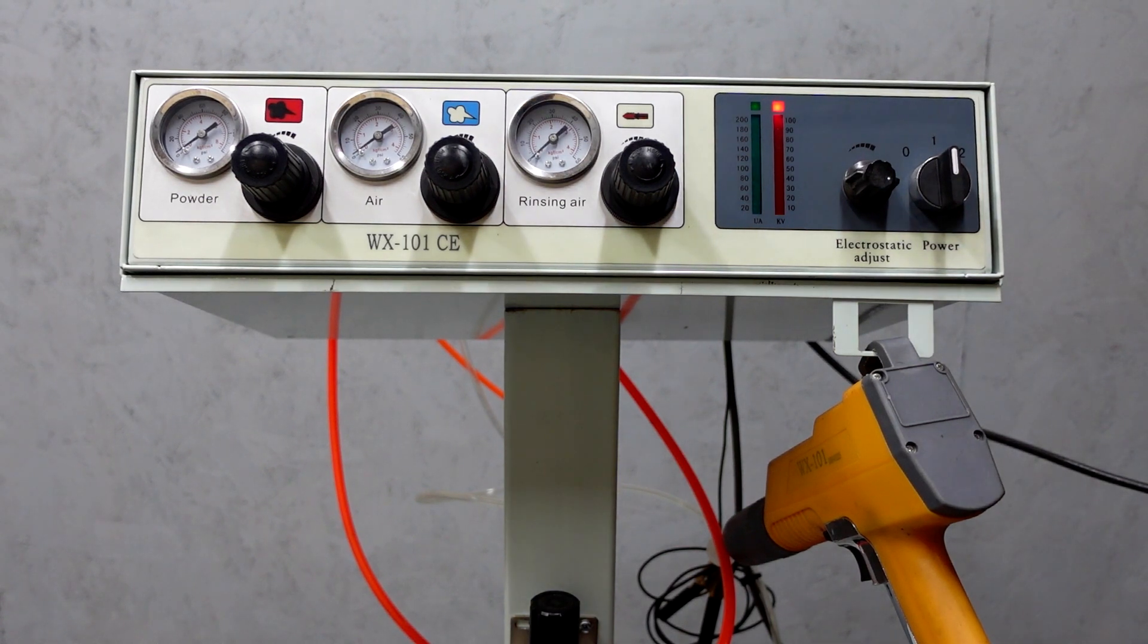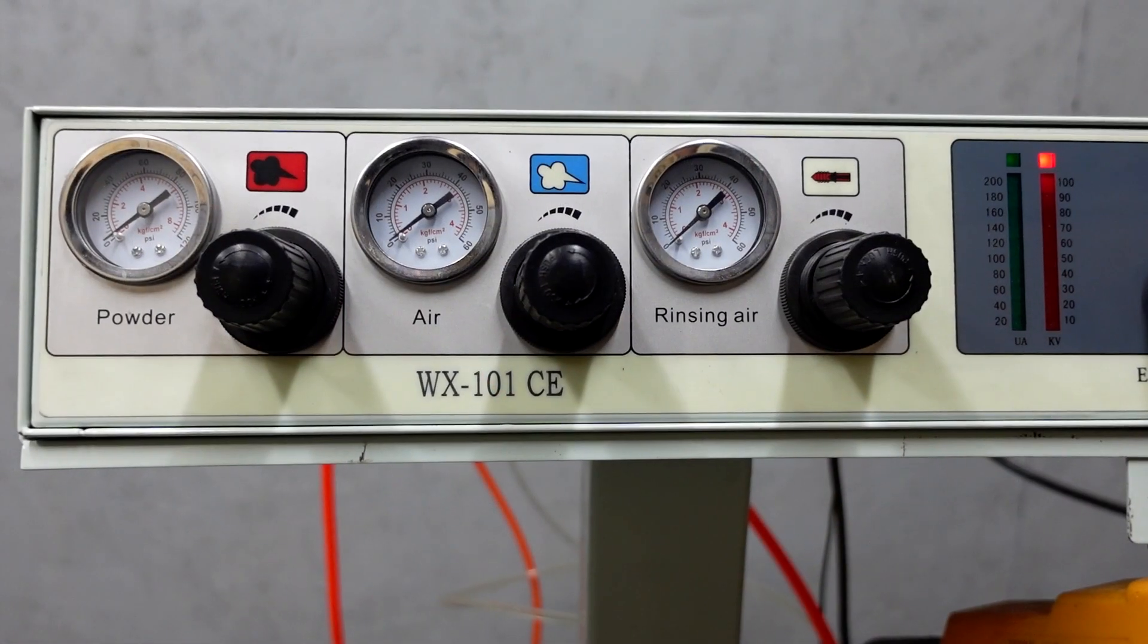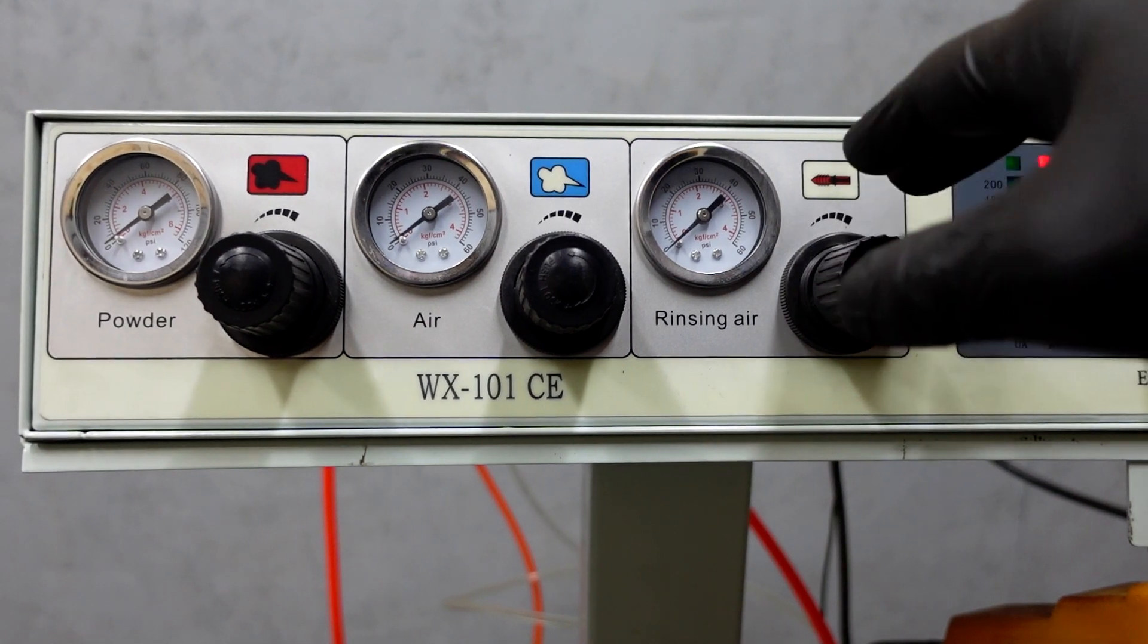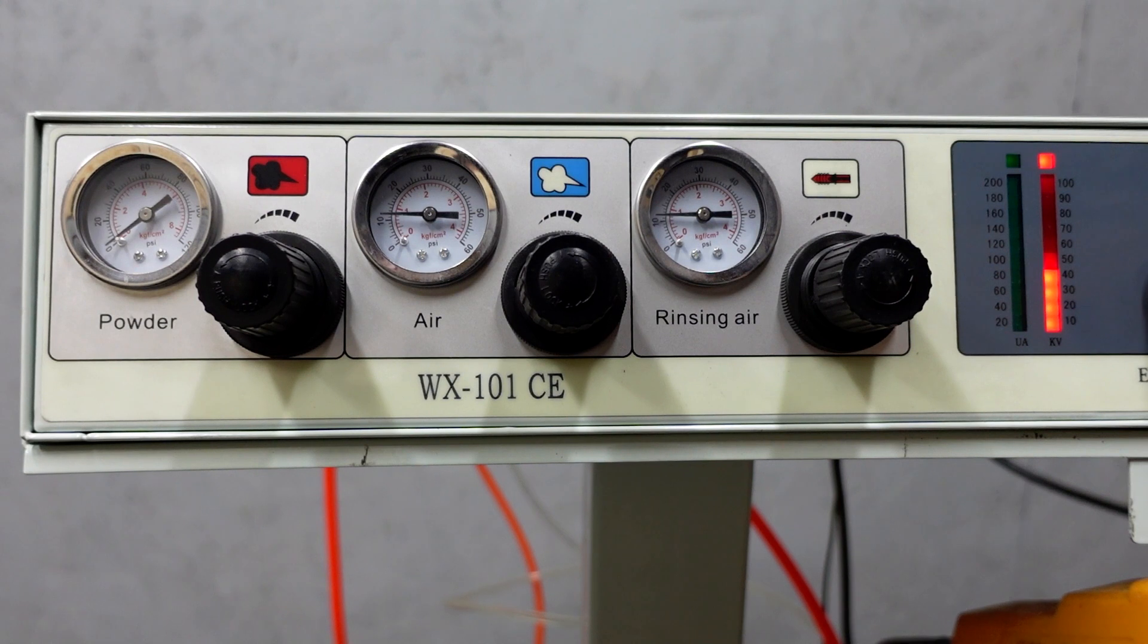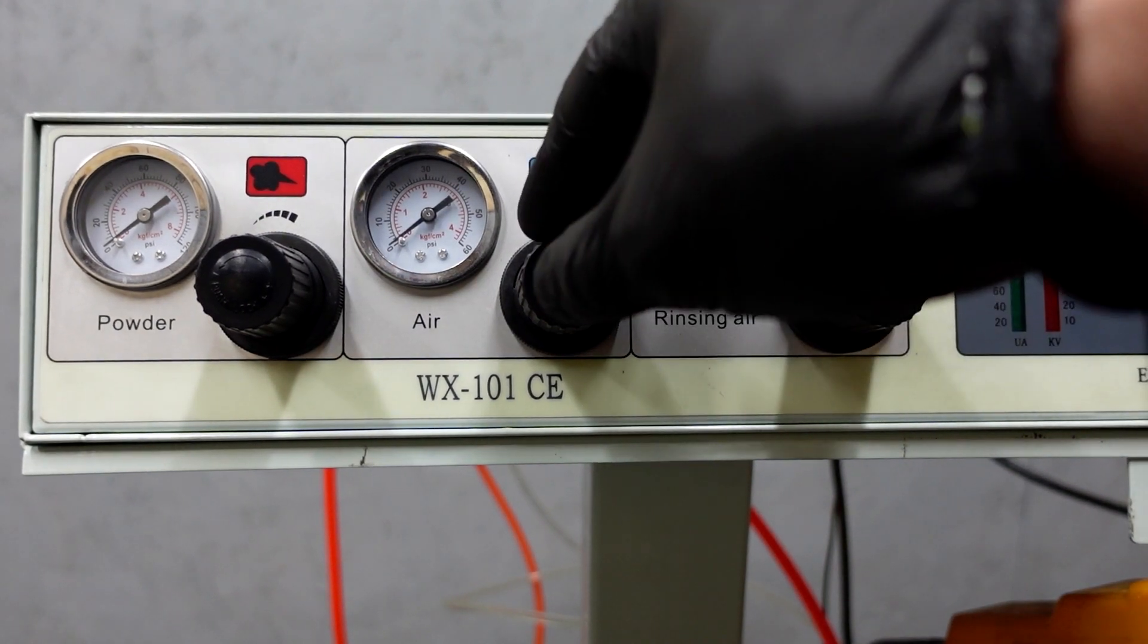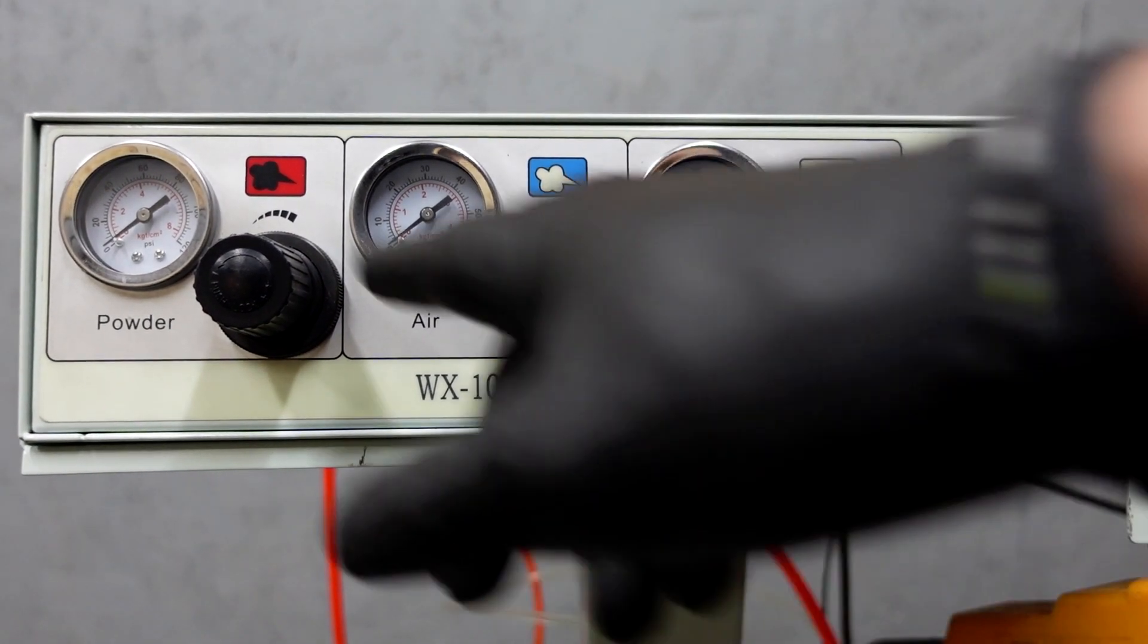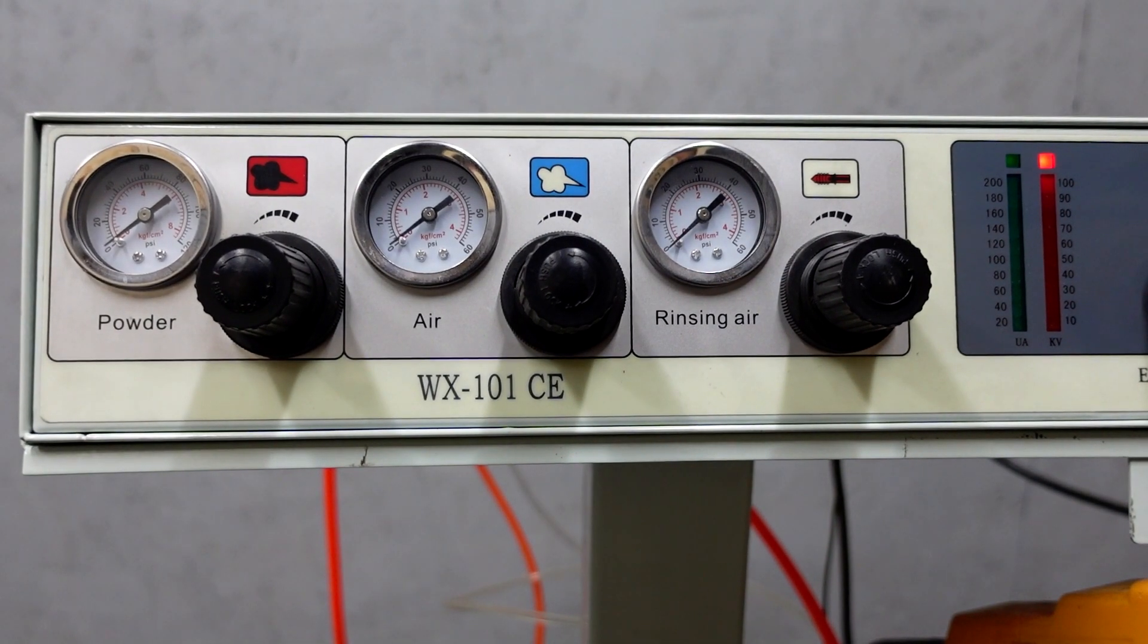Let's move over onto the air. Now it's time to set the dials. The rinsing air is going to be the first one. That I set to 10 psi. Then we go over to the air. Again, that's also set to 10 psi. We'll come back to the powder in a sec, because we'll have to go down to the fluidization adjuster first with our hopper filled with powder.